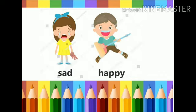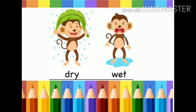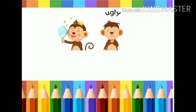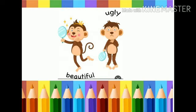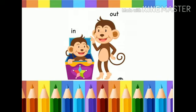Second one: sad and happy. Third one: dry and wet. Fourth one: beautiful and ugly. Fifth one: in and out.